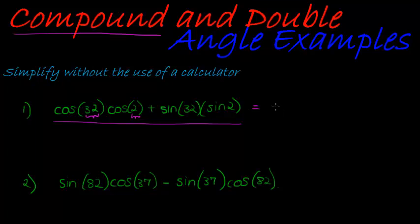So this can be equal to cos of angle A which is 32 minus angle B because cos is different signs which angle B is 2. So this is the same as cos of 30 degrees, isn't it? And cos of 30 degrees I definitely know. That's square root 3 over 2.